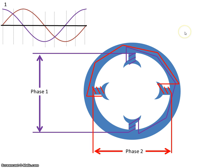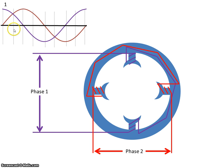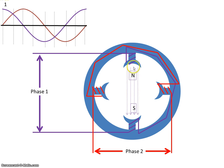At time one, the voltage in phase two is zero, therefore the current is zero, so there is no current flowing through those windings and therefore no magnetic field across those poles. In phase one the voltage is at maximum, so the magnetic field will be in this direction.